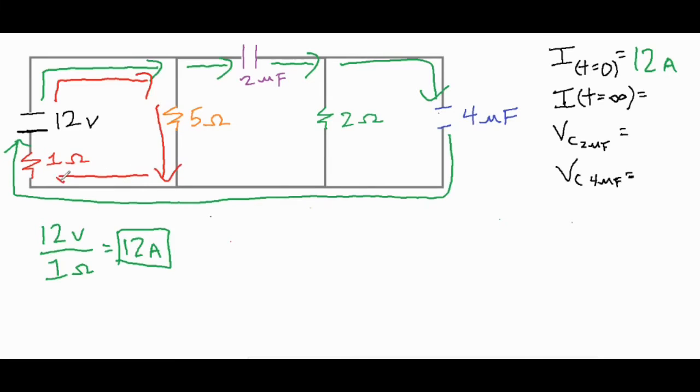As that happens, now the electrons only have a certain way to go, which would be down the first branch through the first 5 ohm resistor and then back around through here. So it makes this little mini series circuit over here and it has the 5 and a 1 ohm resistor. So it has 12 volts total and 6 ohms total, which gives us 2 amps of current. That's after some time has passed and our 2 microfarad capacitor gets pretty charged up.